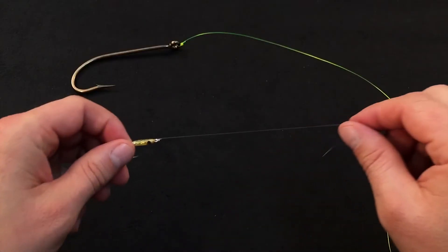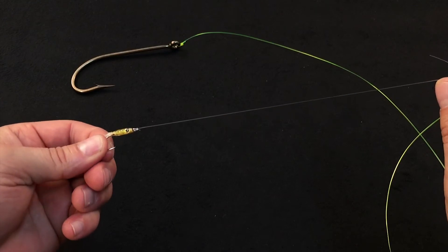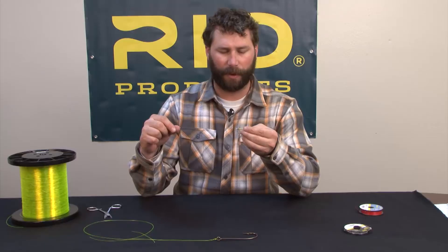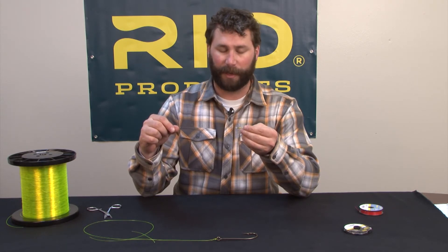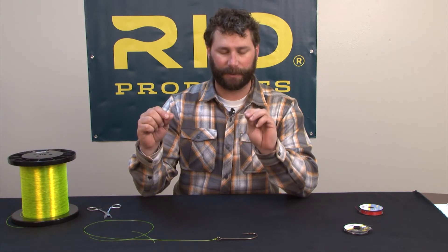Here's the Pitson knot tied on a light saltwater fly. Like I said, it's good for smaller tippet material applications. I would call it best suited for 0x and smaller. And it makes a really nice profile on a dry fly for dry fly fishing applications. That's the Pitson knot.